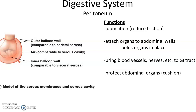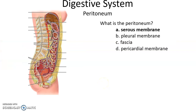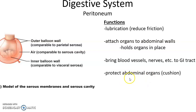The peritoneum can also provide some abdominal organs protection. There is a layer of the peritoneum that lies right in front of the anterior abdominal wall, and that layer has a lot of fatty material, so it can provide some cushioning to protect the abdominal organs.